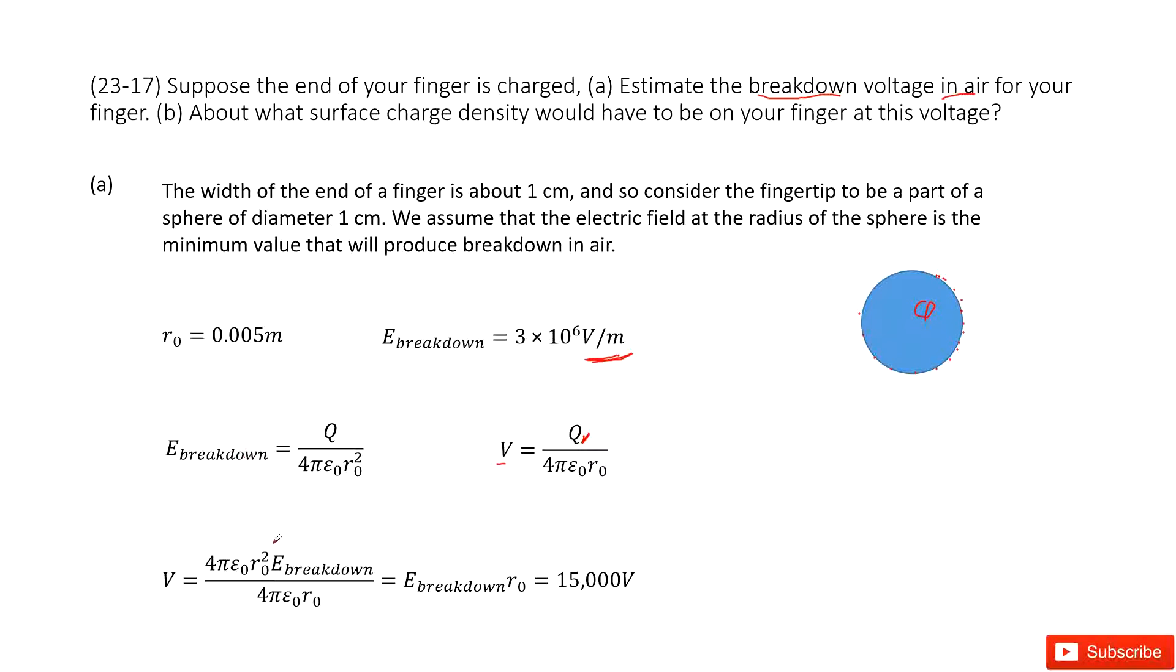So we input this term inside. We can see 4πε₀ cancels, R₀ cancels. So we get the function for V. The E breakdown is given. R₀ is the radius for this spherical object, and we can do the estimate about your finger.